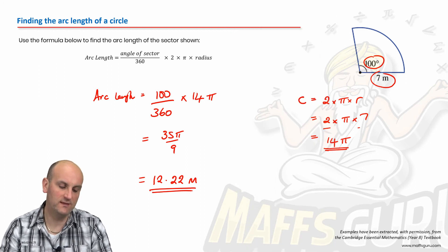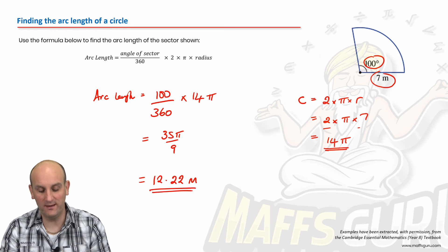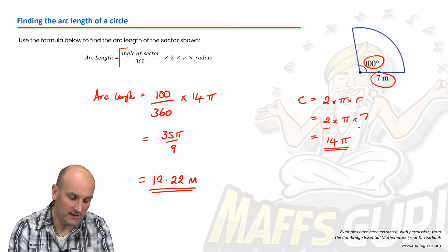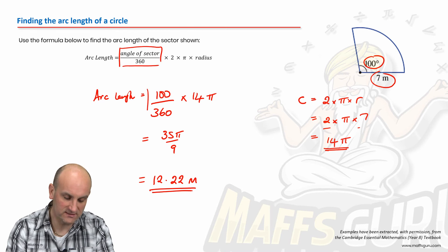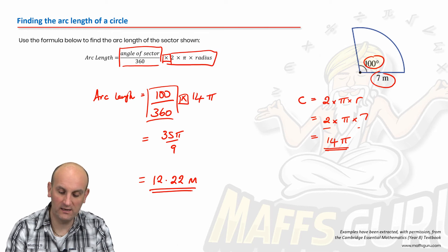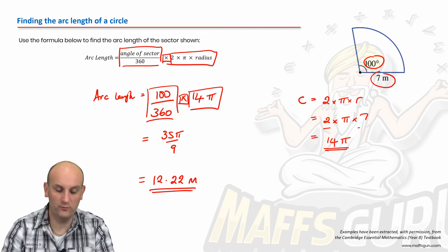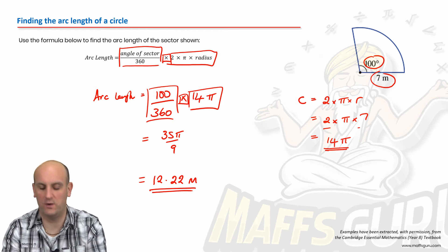Now again, did I use the formula? Yes, I did. Because my angle sector divided by 360 was this section here. Times by was there. And two times pi times radius was effectively where I got the 14 pi from. So I've just done it in a slightly different way.